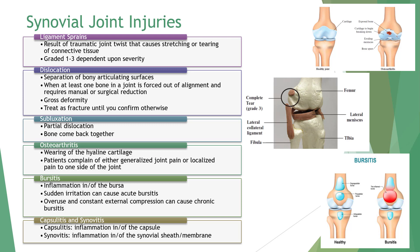In a dislocation, the stabilizing structures of the joint are disrupted, making the joint susceptible to subsequent dislocations. An x-ray is the only absolute diagnostic technique to determine if a dislocation has occurred, allowing visualization of bone fragments from possible avulsion fractures, disruption of growth plates, and connective tissue damage. Dislocations, particularly the first time, should always be treated as a fracture until a fracture has been ruled out.